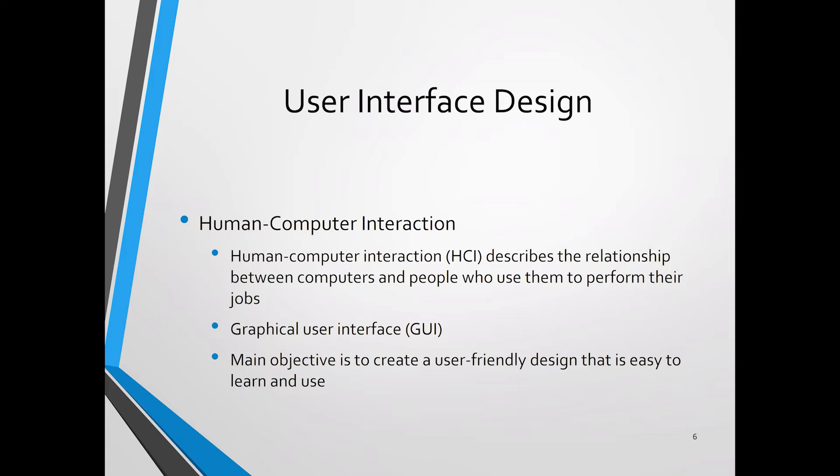Human-computer interaction, or HCI, is a discipline — a sub-discipline of computer science. HCI describes the relationship between computers and the users who use them to perform their tasks. Normally HCI is conveyed through the GUI — graphical user interface. The main objective of HCI is to create a user-friendly environment and design that is easy to learn and to use. HCI is also related to ergonomics — for example, ergonomic office chairs are designed so that you can work comfortably for a long time without tiredness.